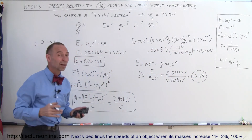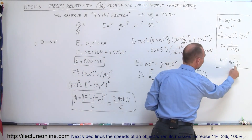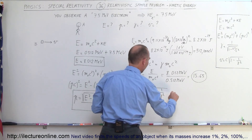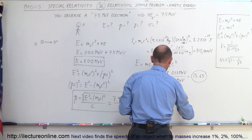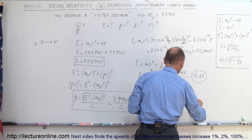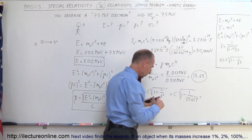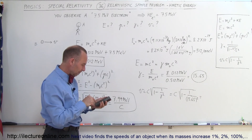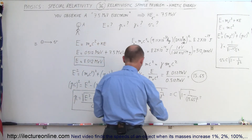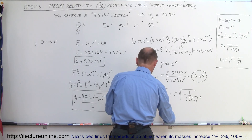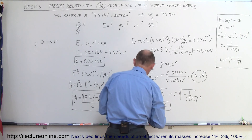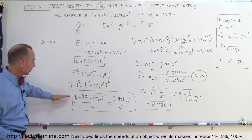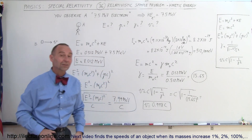That's a high number, so the velocity must be fairly fast. The velocity equals the speed of light times the square root of 1 minus 1 over gamma squared. Using gamma = 15.65, we square it, take the inverse, subtract from 1, and take the square root. The velocity equals 0.998c — the electron has to be traveling at 99.8% of the speed of light to have that kinetic energy. That's how we find the total energy, momentum, Lorentz factor, and velocity of the electron.